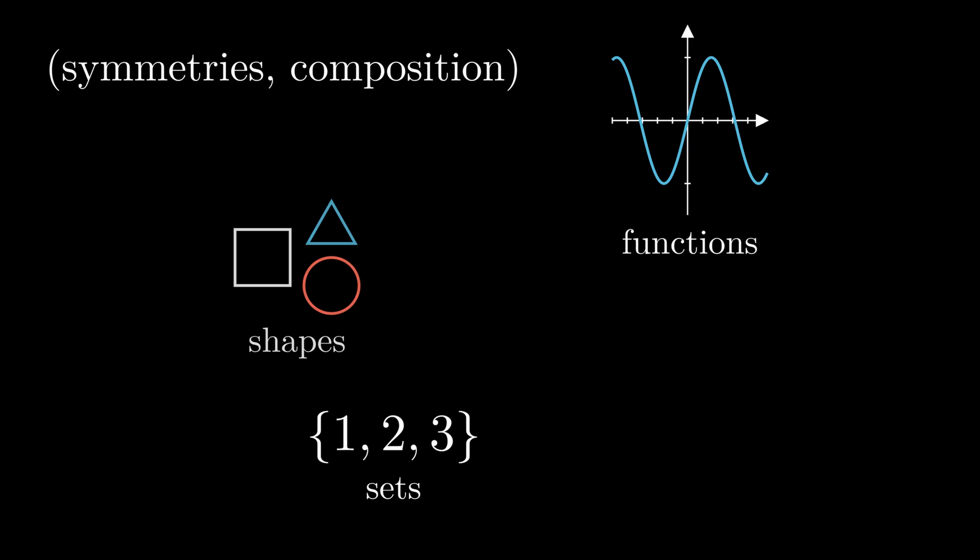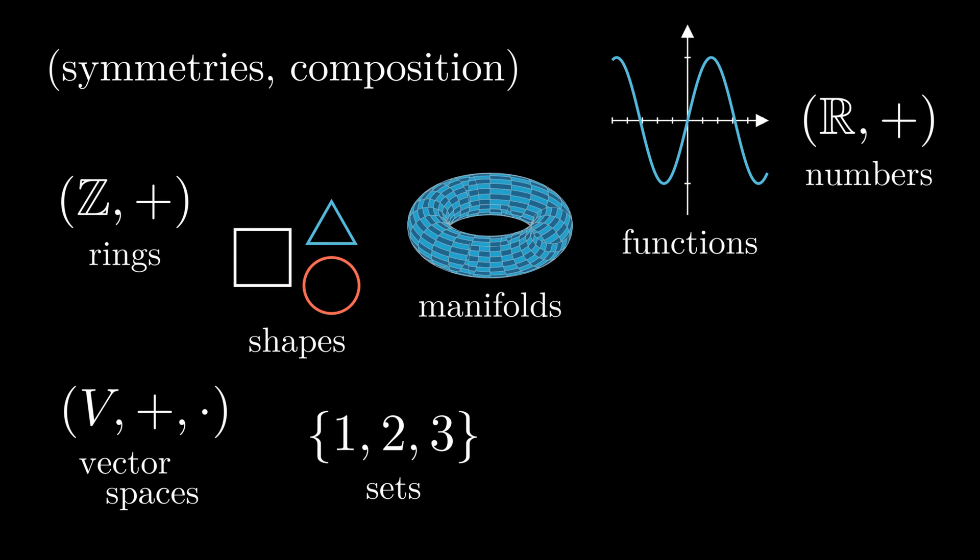But how can symmetries more generally be turned into groups? The key is to observe that given an object, you can make a set of all the symmetries for that object and equip with composition, and it becomes a group. Any object with symmetry you observe in the world can be found to have an underlying group using this technique. This includes functions, sets, shapes, numbers, but also more unconventional objects like rings, vector spaces, manifolds, topological spaces, and even other groups.